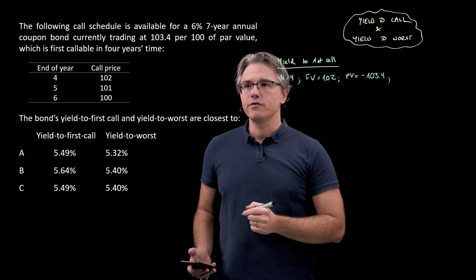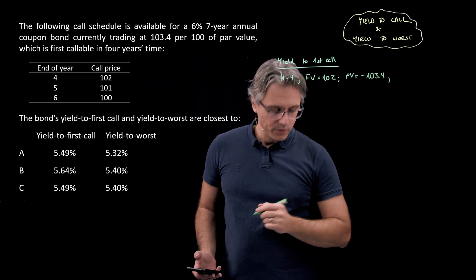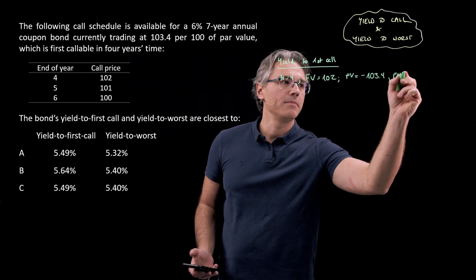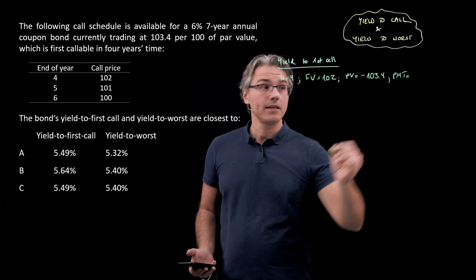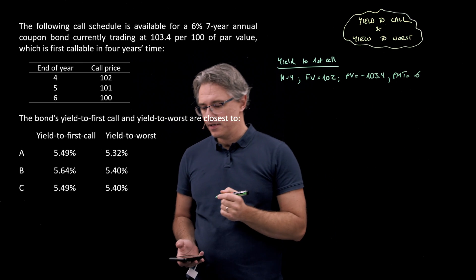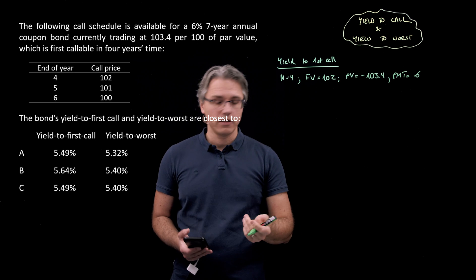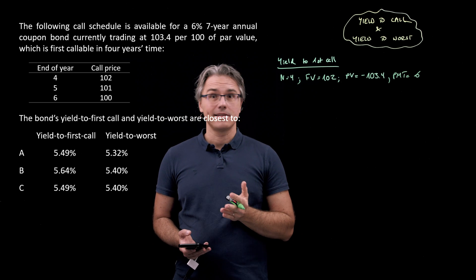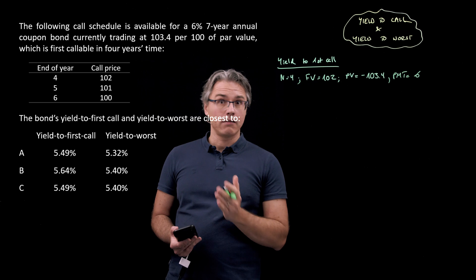What else do we have? We've got a coupon on this bond, so a PMT, a payment equal to six, because the bond pays a six percent coupon on a par value of 100. So let's get these inputs into our calculator now.